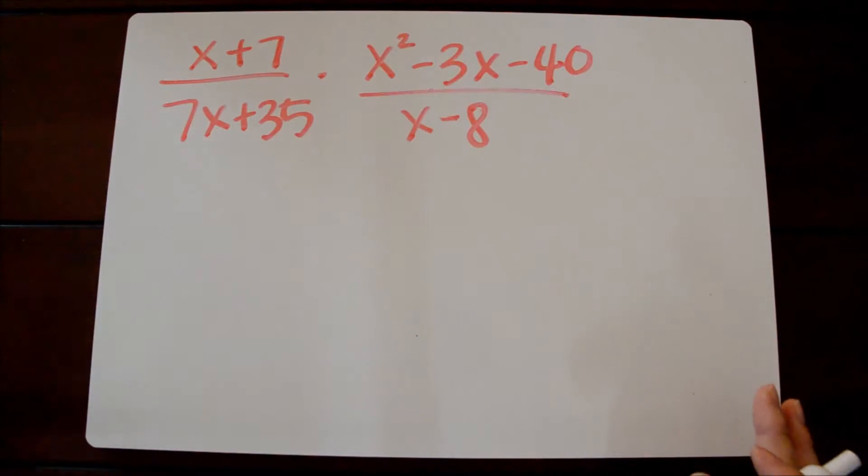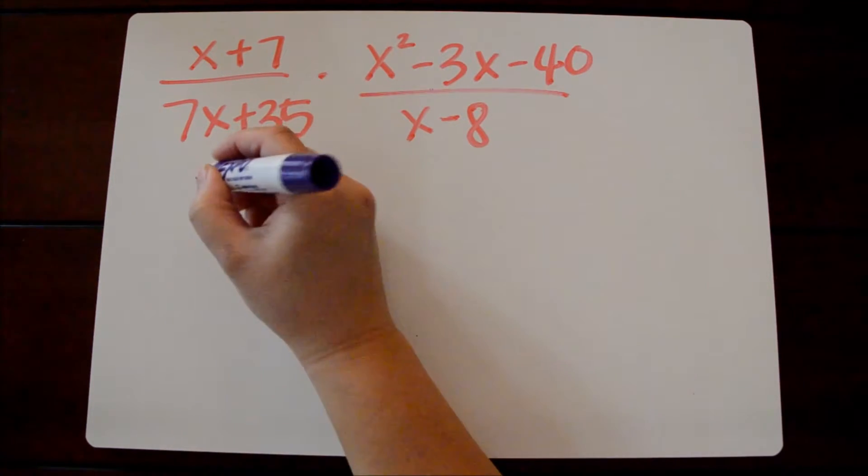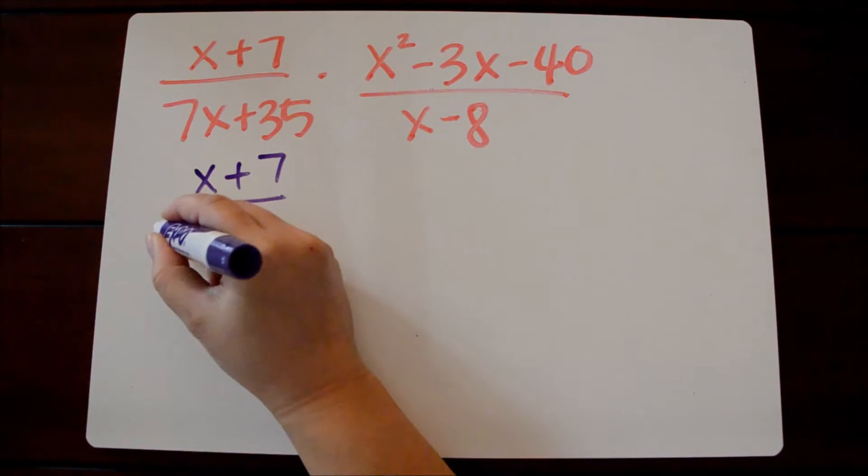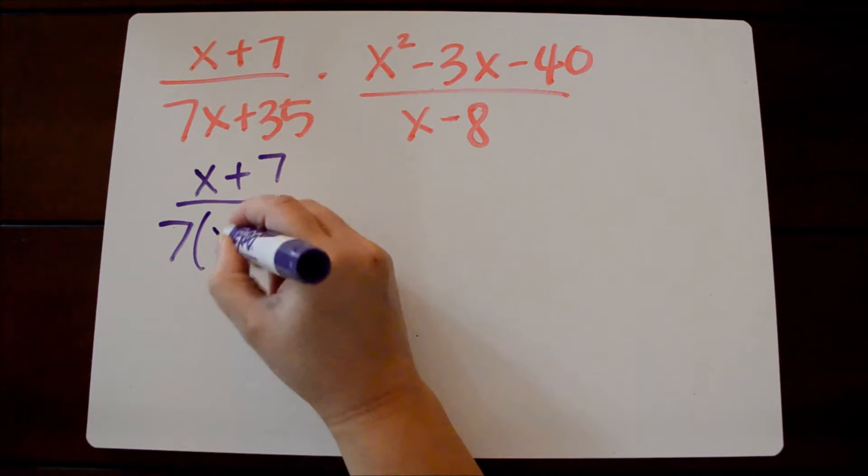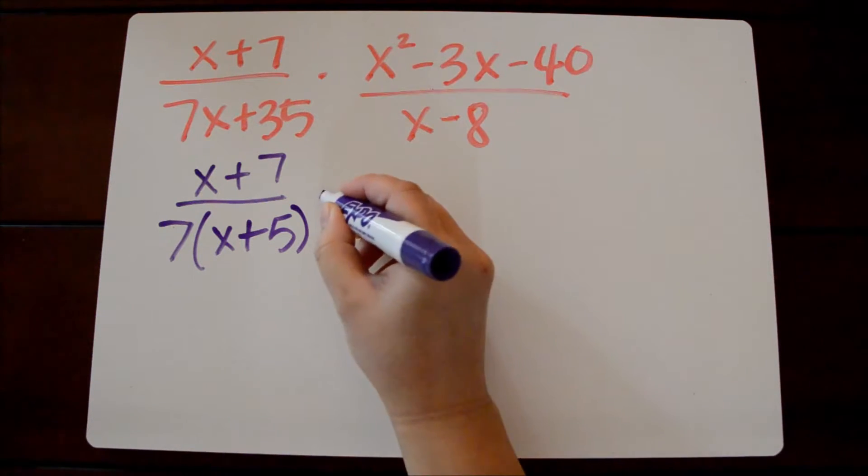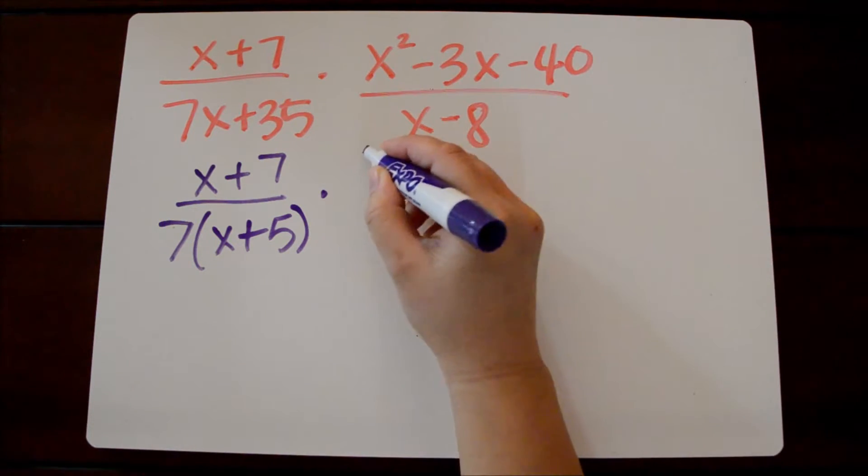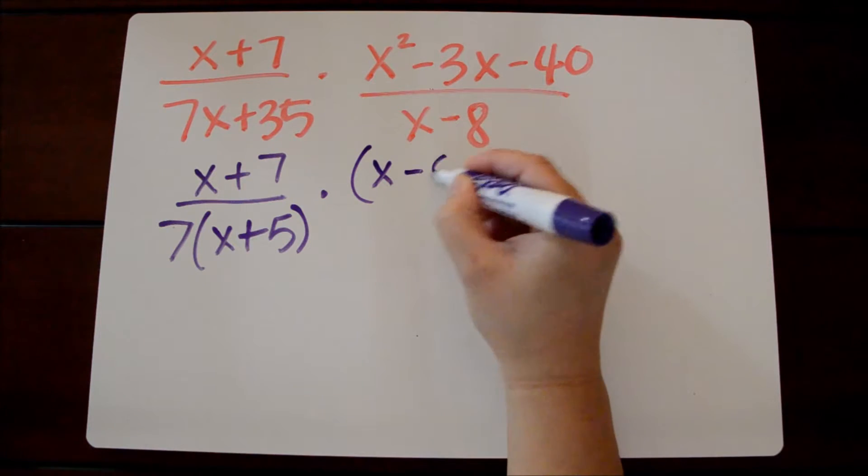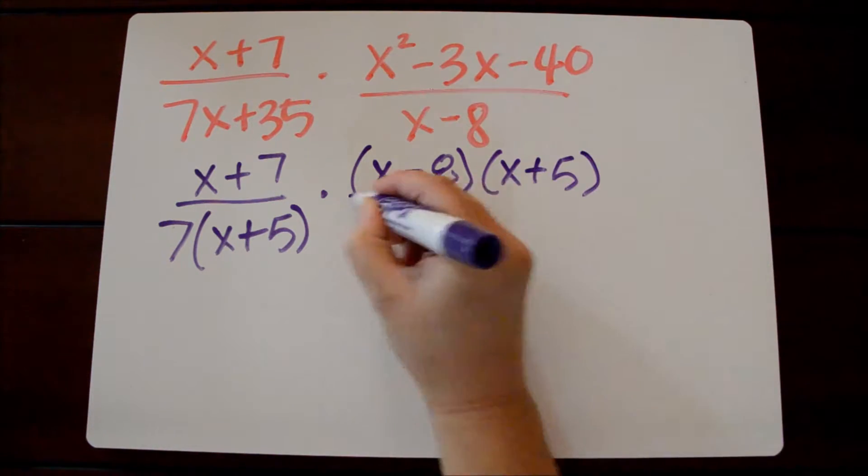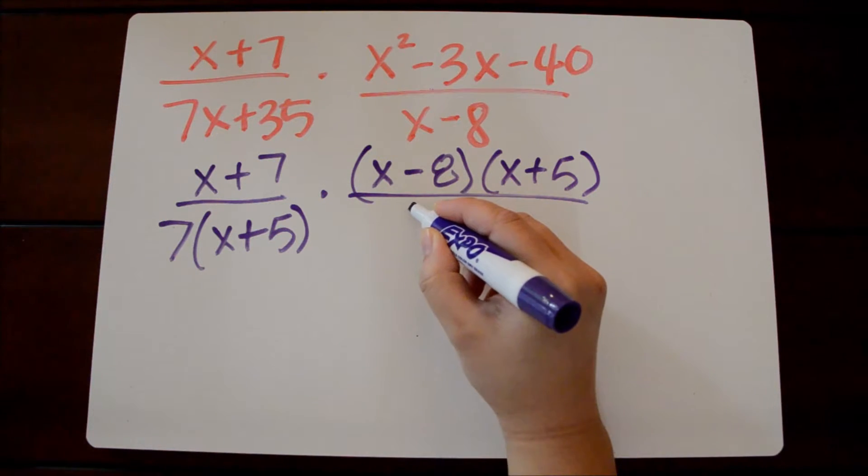Let's take a look at another example. Again our first step is to factor as much as we can. Here we cannot factor the numerator but we can factor 7 out of the denominator. So that will be 7 times x plus 5. And then in the numerator here with the trinomial we could factor this as x minus 8 and x plus 5. And the denominator we'll leave this as x minus 8.